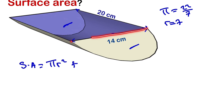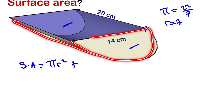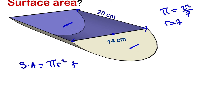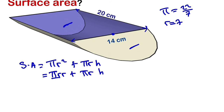The circumference of a half-circle is π r, so the curved surface area is π r times h. Our full surface area formula is therefore π r squared plus π r h. This can be factorized: taking out the common factor π r, we get π r times the bracket (r plus h). This factorized form is preferable when working without a calculator.